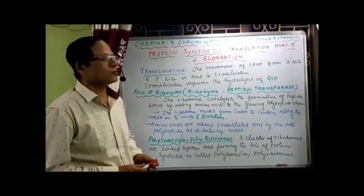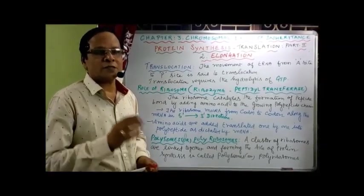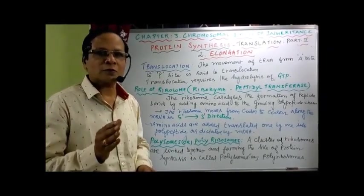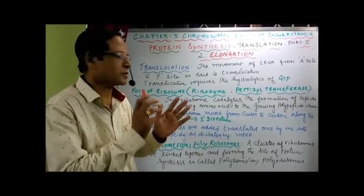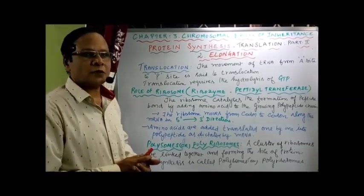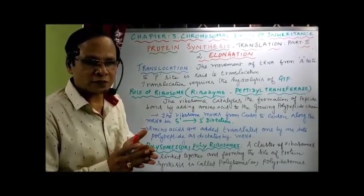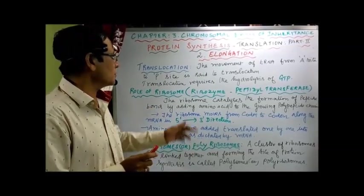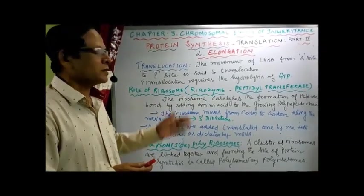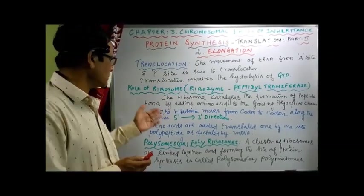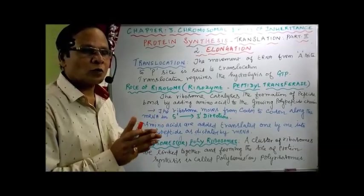What is translocation? The movement of tRNA with peptides from A-site to P-site is called translocation. It is an energy-requiring process — the energy is provided by the hydrolysis of guanosine triphosphate, that is GTP. The ribosomes contain the main enzyme peptidyl transferase. The P-site is so named because it contains peptidyl transferase enzyme for the formation of peptide bonds. The ribosome catalyzes the formation of peptide bonds between amino acids, adding amino acids one by one to the growing polypeptide chain.